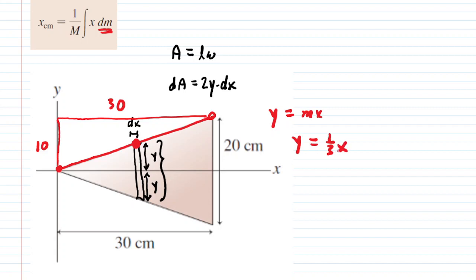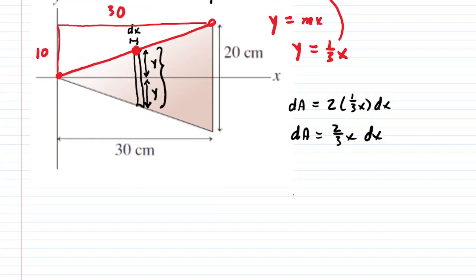And that's wonderful because we're going to substitute that one third x into this y right here. So now our differential area our dA can be written as 2 multiplied by one third x dx. And if we simplify that just a tad we can say dA is equal to two thirds x dx. So this is looking good but it still doesn't relate to mass just yet.